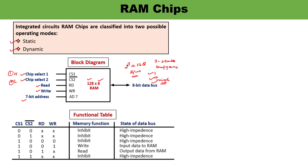Now let us understand the functional table. In the functional table, seven-bit address lines are used — address lines carry the address only, so they are required at all times. The table has four columns: chip select one, chip select two, read, and write. Accordingly, the memory function and the state of the data bus are mentioned. As noted, CS1 is active high so it must be 1, and CS2 is active low so it must be 0 for perfect operation. These are the only conditions where an operation will be performed, depending on the state of read and write.